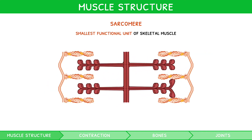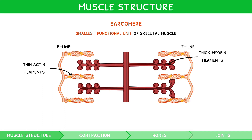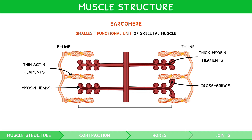Each sarcomere contains thin actin filaments attached at one end to a Z-line. Between layers of actin filaments are thick myosin filaments arranged in an alternating pattern. Each myosin filament has many heads which form cross bridges with binding sites on actin during contraction. Due to the overlapping of filaments, the region where actin and myosin overlap is denser and so darker in colour, giving its name of the dark band.